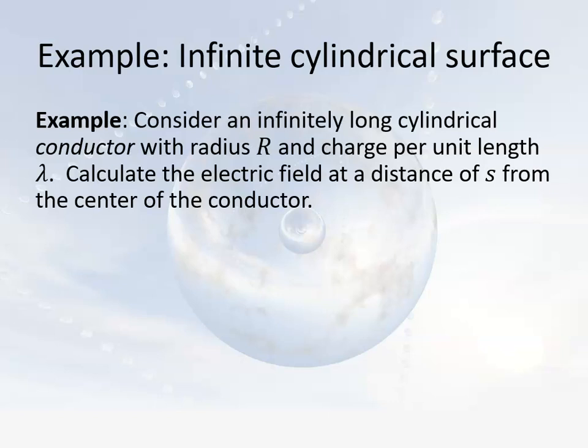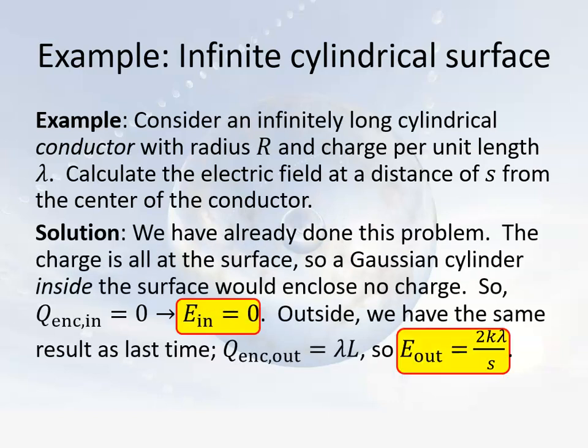Next, let's consider another almost trivial example — an infinitely long cylindrical conductor. With a conductor, all the charges are on the surface; it has radius big R and charge per unit length lambda. We've already done this problem in essence. Since all charge is on the surface, any Gaussian cylinder inside the surface would include no charge, so E = 0 inside. Outside, you'd get lambda·L as the enclosed charge, just like in the previous example. So if s < R, the electric field is zero; if s ≥ R, the electric field is 2k·lambda / s.